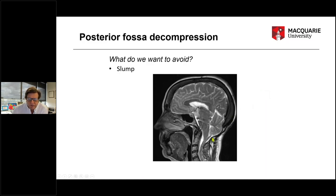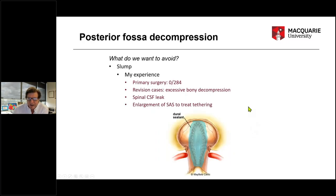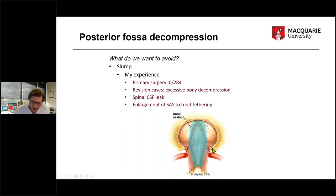Finishing on slump — this is where the cerebellum and brainstem have fallen through into the spine, even more than the original Chiari. We don't see that because we're careful about how much bony decompression we do. This textbook drawing shows the foramen magnum, and the typical drawing shows bone removal going outwards so the width of bony removal is greater above the foramen magnum than at the foramen magnum itself. Our view is that the foramen magnum is the whole point, and there's no need to have bony removal more extensive above it. Our bony removal goes straight up and across. I think that avoids slump.